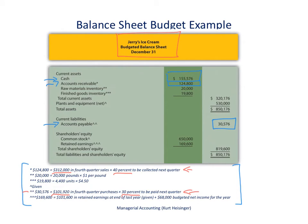The inventory amounts come from our raw materials purchases budget and production budget. Raw materials inventory comes from the raw materials purchases budget, and finished goods inventory comes from the production budget. The raw materials purchases budget shows we would have 20,000 pounds of raw materials at the end of the fourth quarter, and our standard price per pound is $1. The production budget shows we were expecting 4,400 units of finished goods in inventory at the end of the fourth quarter, with a standard cost per unit of $4.50. So that gives us raw materials inventory of $20,000 and finished goods inventory of $19,800.